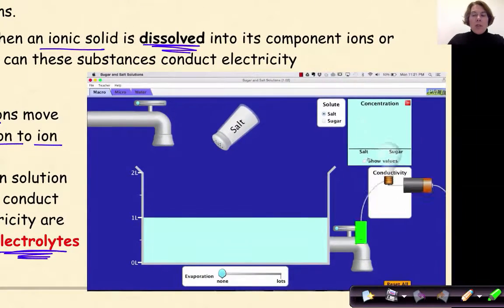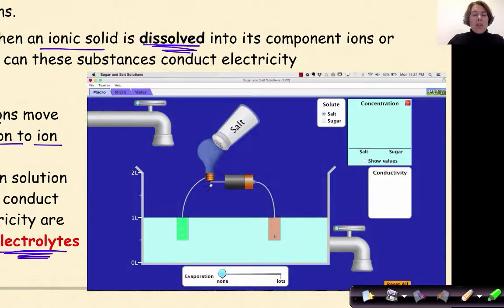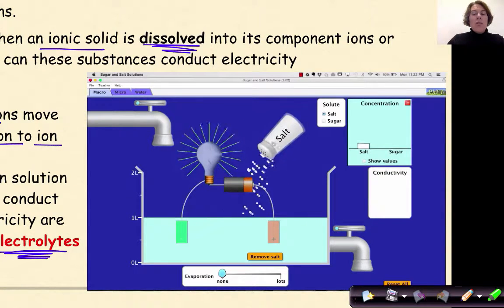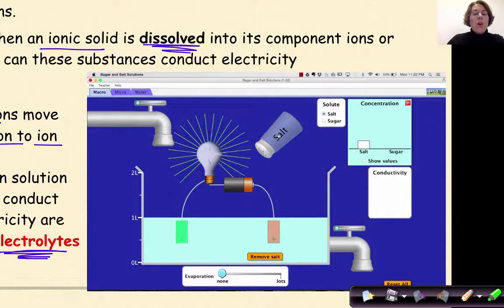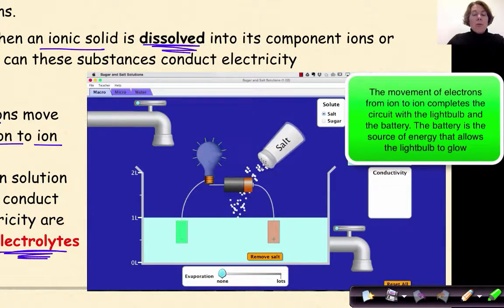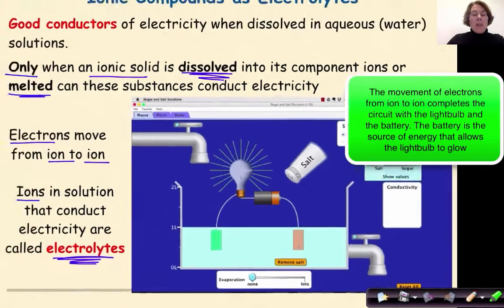So here we have a little simulation where we're going to put a conductivity tester in water, and initially the light bulb is not lit. As soon as we add the salt, the salt will break down into ions and we can see that the bulb grows brighter and brighter because the electrons are able to move from ion to ion, therefore lighting up the light bulb.